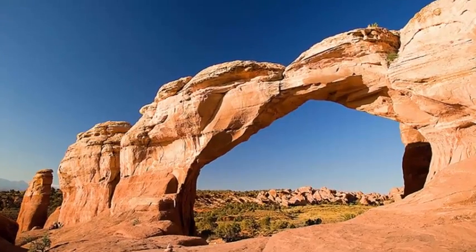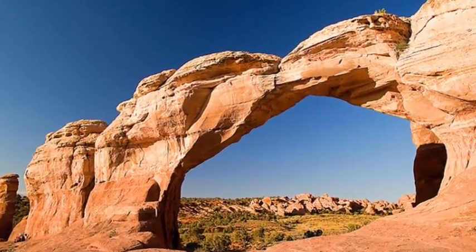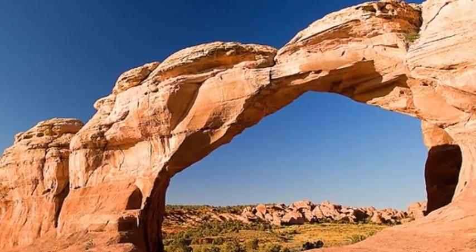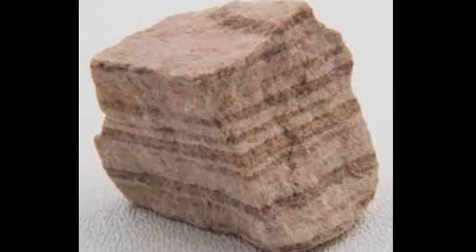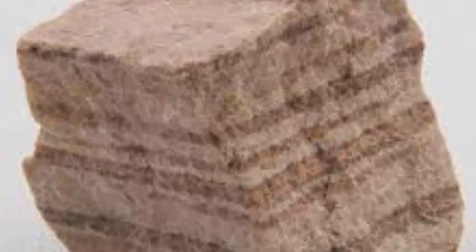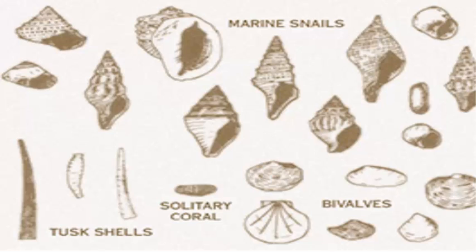Now let's talk about sedimentary rock. Sedimentary rocks are types of rock formed by the deposition of material at the earth's surface and within bodies of water. Have you ever seen a sandstone? It is a rock made of compressed sand, and in between these layers of compression it may also contain fossils of plants, animals, and other microorganisms.